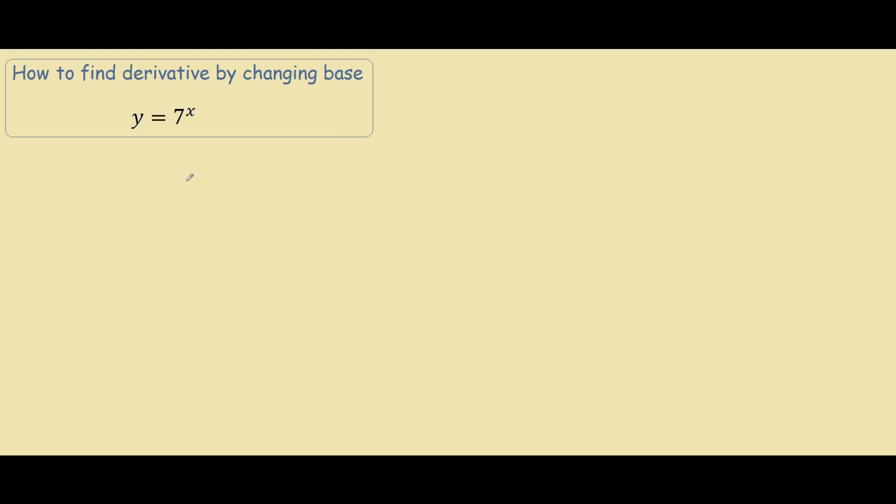So our first step is to take ln of both sides, so we have ln of y equals ln of 7 to the power of x. We also know this is the same thing as bringing the x to the front from our log laws.